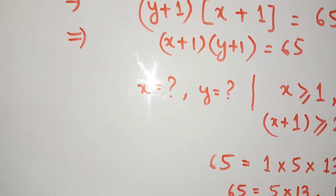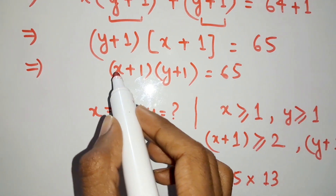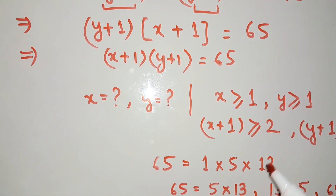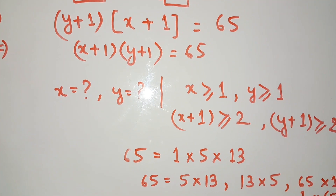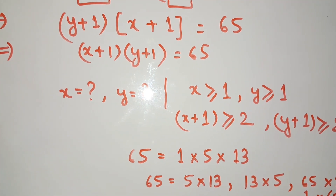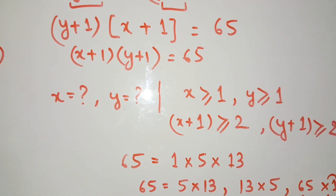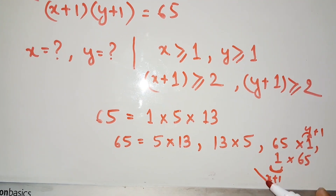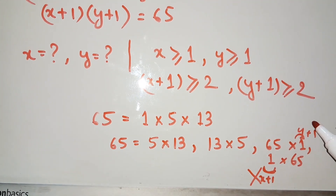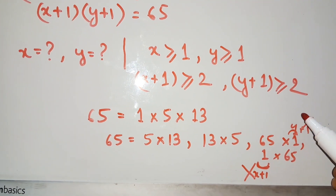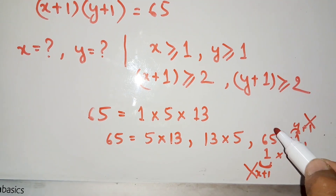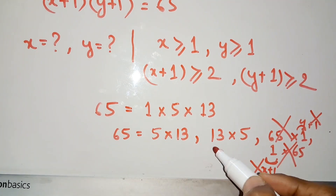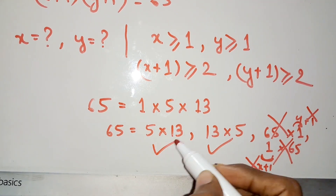Since x plus 1 starts from 2 and y plus 1 starts from 2, the factor 1 cannot be assigned to either x plus 1 or y plus 1. So the factor pairs 1×65 and 65×1 are both eliminated. Only the cases 5×13 and 13×5 are possible.